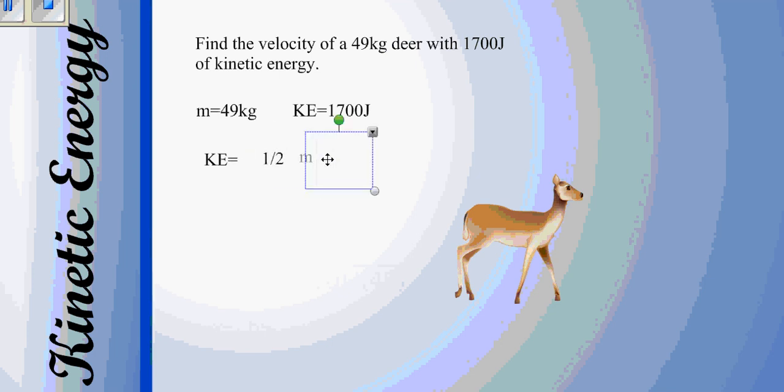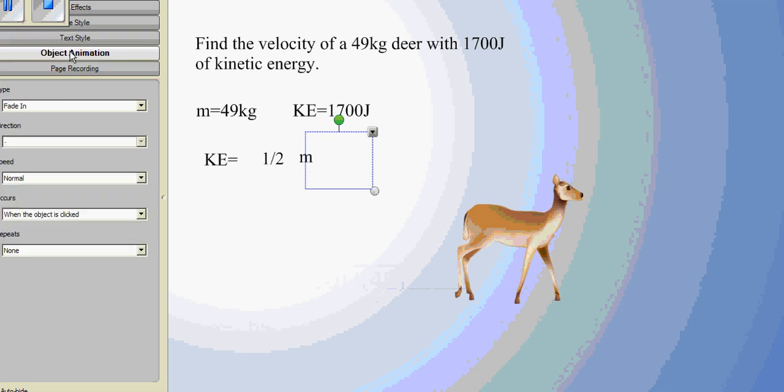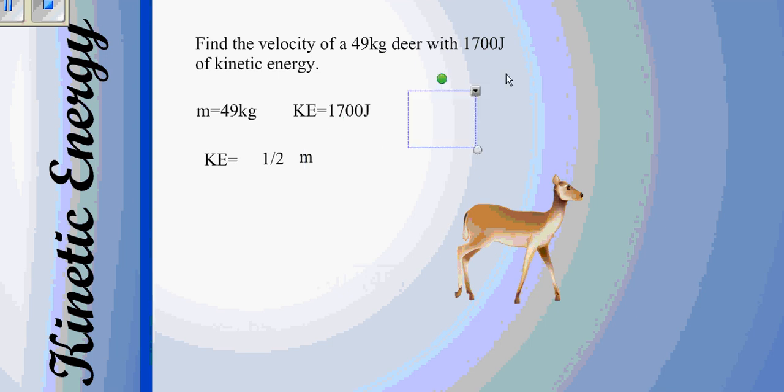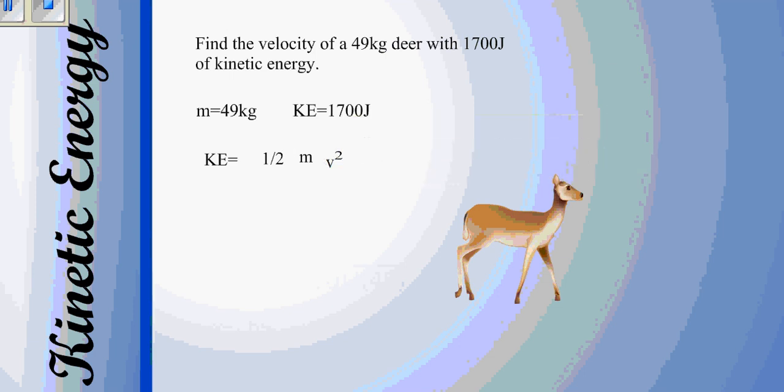So in this case, we have KE equals one half mv squared, and we want to solve it for velocity. So we want to get that v by itself. To get the one half on the other side, we're going to want to multiply everything by 2. So instead of having one half, I want to get rid of that, and multiply both sides by 2.